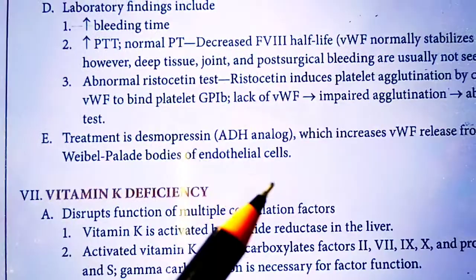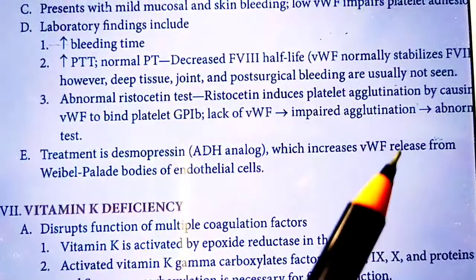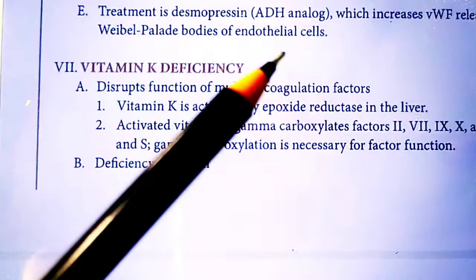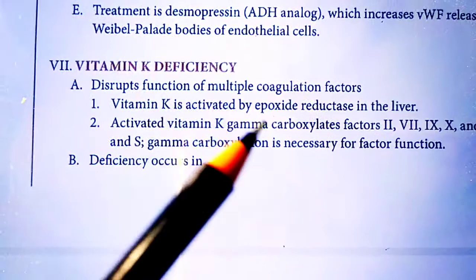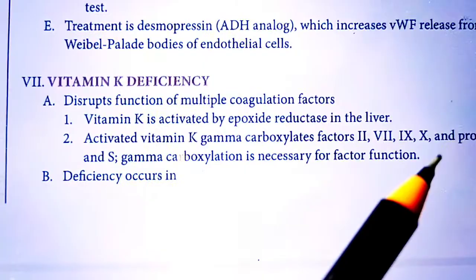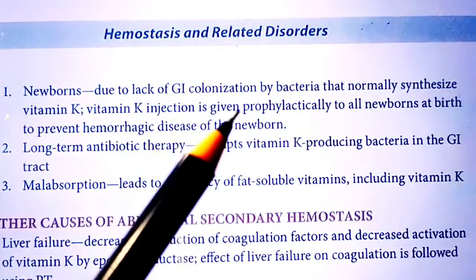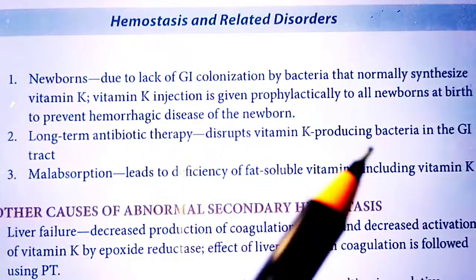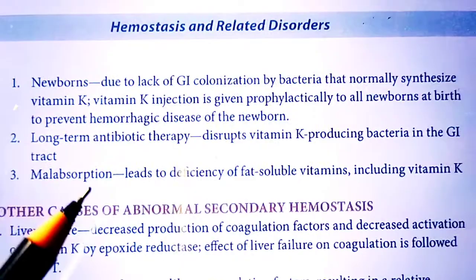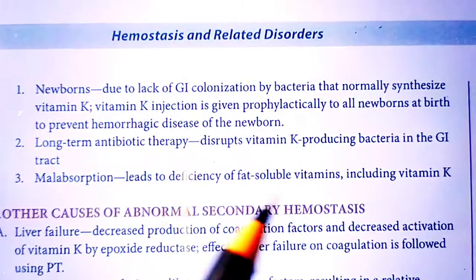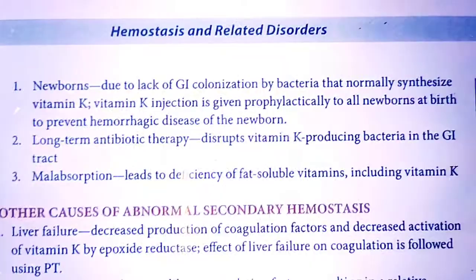Vitamin K is necessary for the maturation of coagulation factors 2, 7, 9, and 10. Deficiency occurs in newborns due to lack of GI colonization by bacteria. Malabsorption of fat-soluble vitamins, including Vitamin K, can also be a contributing factor, leading to impaired coagulation and related blood disorders.